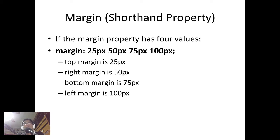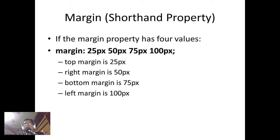If the margin property has four values — for example, margin: 25px 50px 75px 100px — the first number is the top margin (25px). Going clockwise, the second number is the right margin (50px), the third is the bottom margin (75px), and the fourth is the left margin (100px).